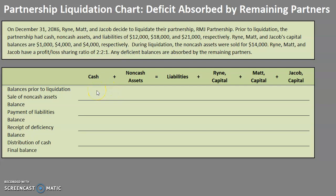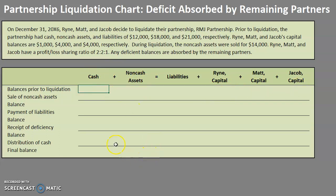Before we jump into this problem, let's take a closer look at the liquidation chart. Our first line is going to be our beginning balances, grabbed from the chart. Then we will sell the non-cash assets, find a new balance, pay off the liabilities, find a new balance, handle the deficiency, find a new balance, and then distribute the cash. For every line item, use the equation up top to make sure it balances — if it doesn't, we know we made an error somewhere.